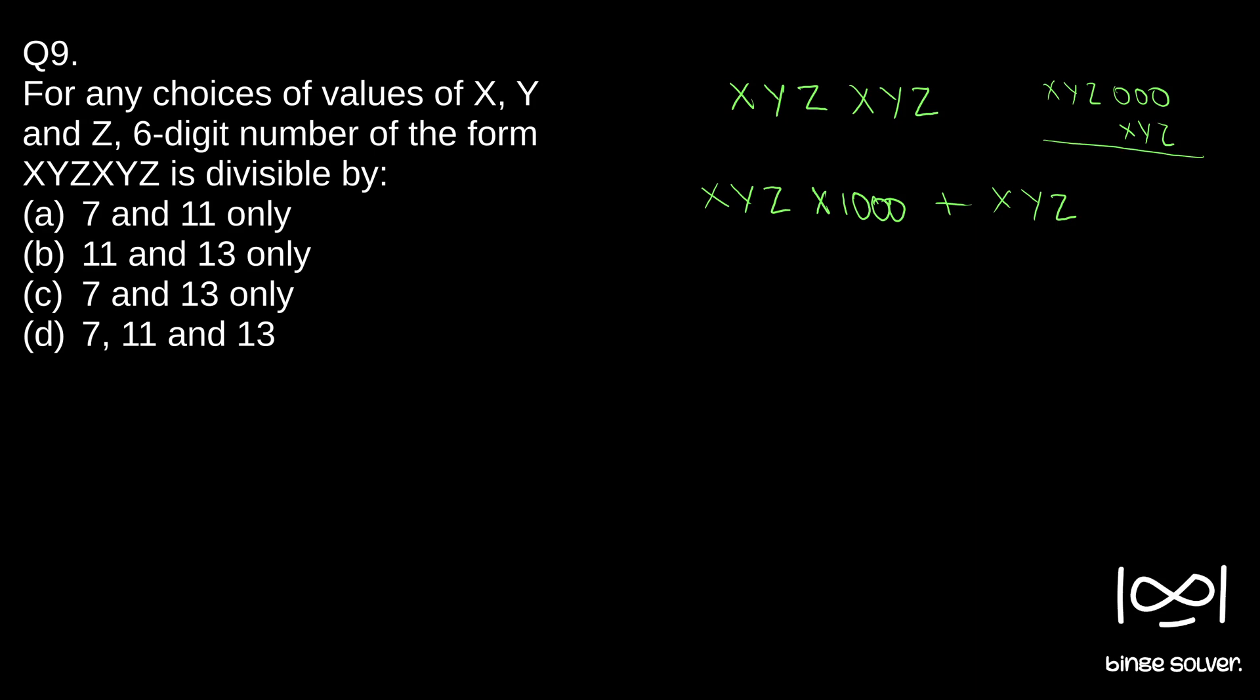If you add XYZ, you get XYZXYZ. That's why we can split this into this form. And if you take XYZ common, we get thousand plus one, or XYZ into thousand one.